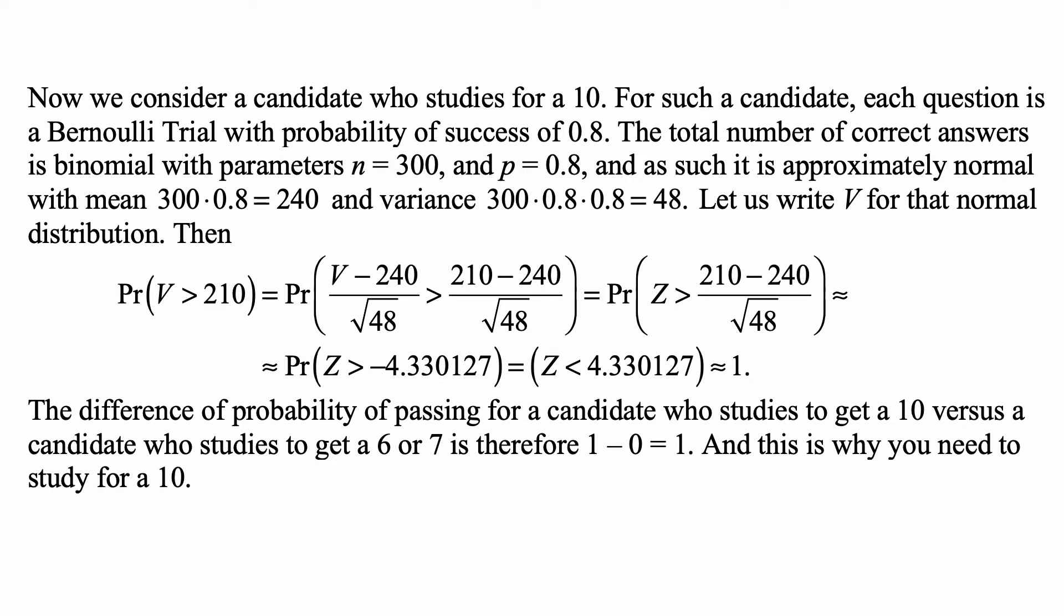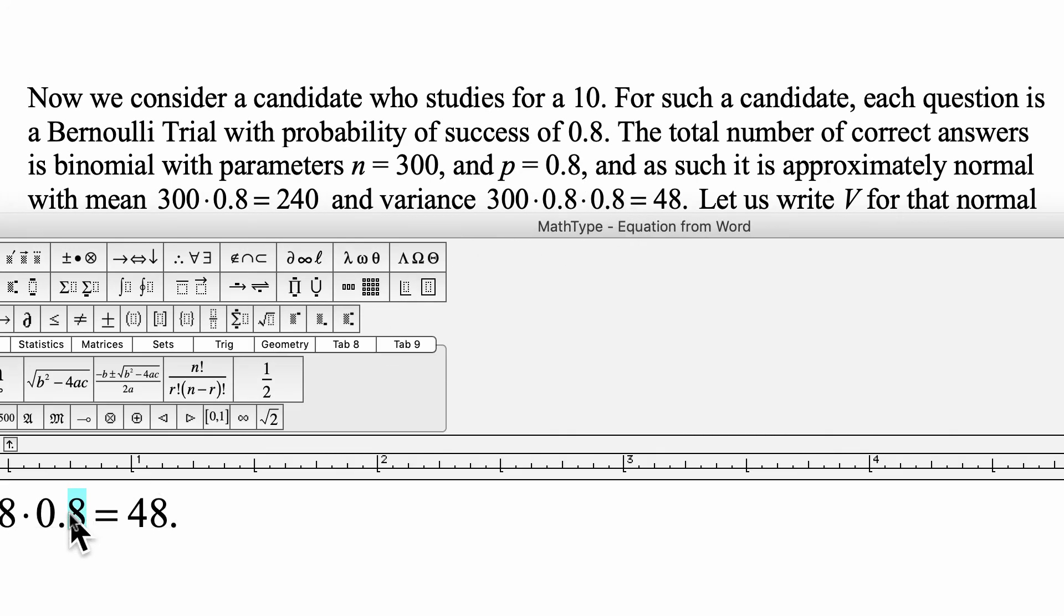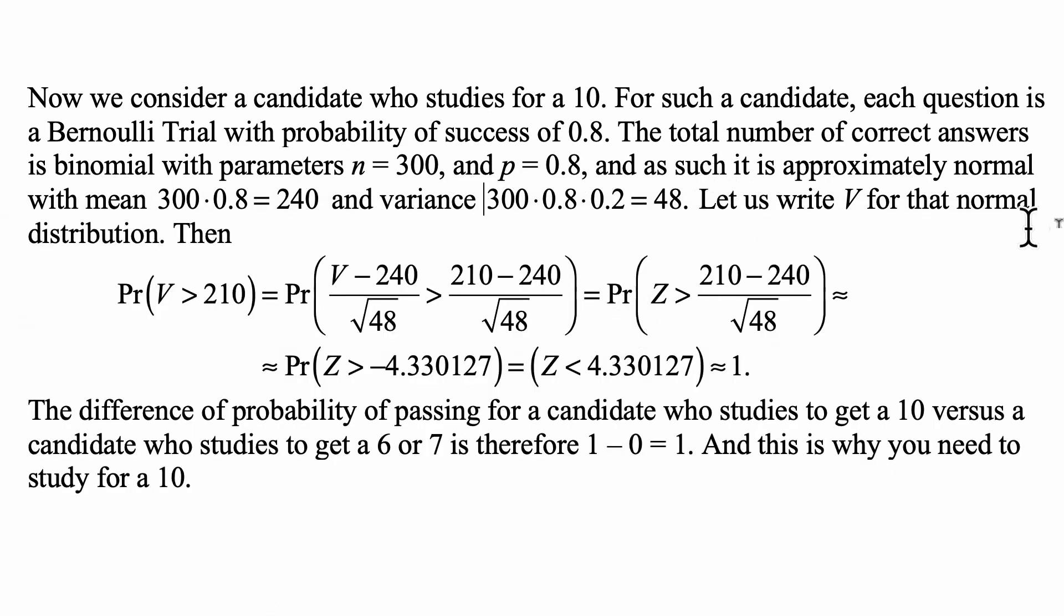What happens if you study for a 10? Well, now we consider a candidate who studies for a 10. For such a candidate, each question is a Bernoulli trial with probability of success of 0.8. The total number of correct answers is binomial, with parameters n = 300 and p = 0.8, and as such is approximately normal, with mean 300 × 0.8 = 240, and variance 300 × 0.8, I'm sorry, times 0.2, that's a typo. So, times 0.2, which is 48.